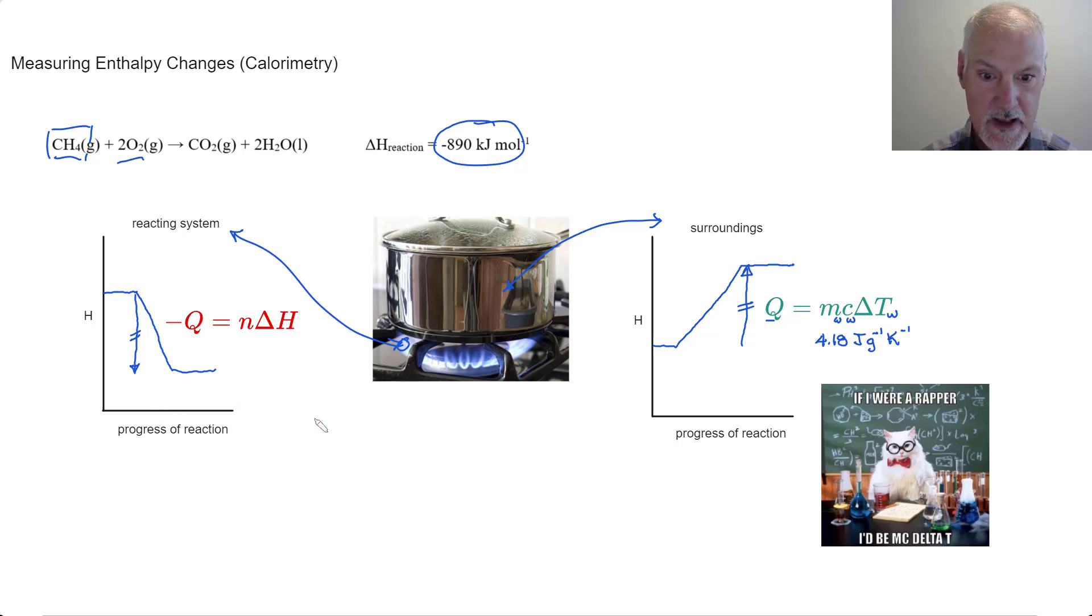This Q is the same as the Q that you see over here, except the negative sign to indicate that it's being lost. Let's put these two expressions together. That would then give us the number of moles times the enthalpy change, the molar enthalpy change, will equal MC delta T. It's important to remember that the information you use here is gleaned from the reaction.